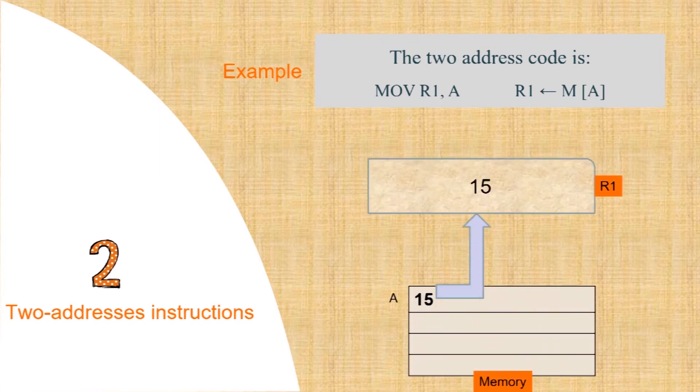Two address instructions. These instruction formats are most common in computers in which two address fields exist. Each address field can specify either a processor register or a memory word. The two address code is move R1 A, R1 arrow MA. The move instruction moves or transfers the operands to and from memory and processor registers. Here, instructions meaning is move data from memory location A to register R1.